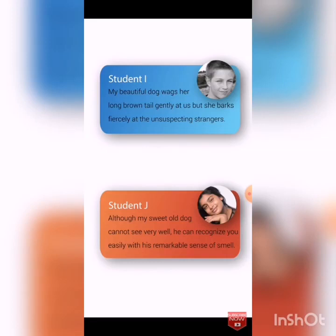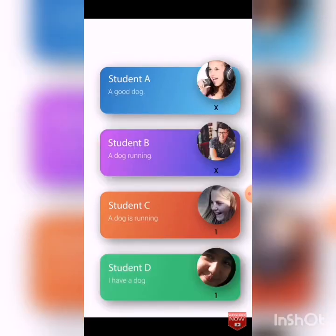I evaluated all the students. Let us see how many marks they will take for their sentences. Student A took 0, B took 0, C and D took 1 and 1. Let us see why.